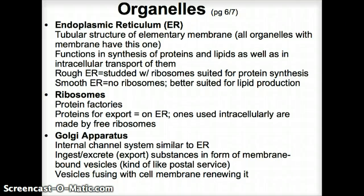The rough ER has little bumps on it, if we would be able to touch it. And they are studded with ribosomes, and ribosomes are the protein factories which will come next. The smooth ER are not having ribosomes on it, so they're not suited for protein synthesis, but they are suited for lipid production.